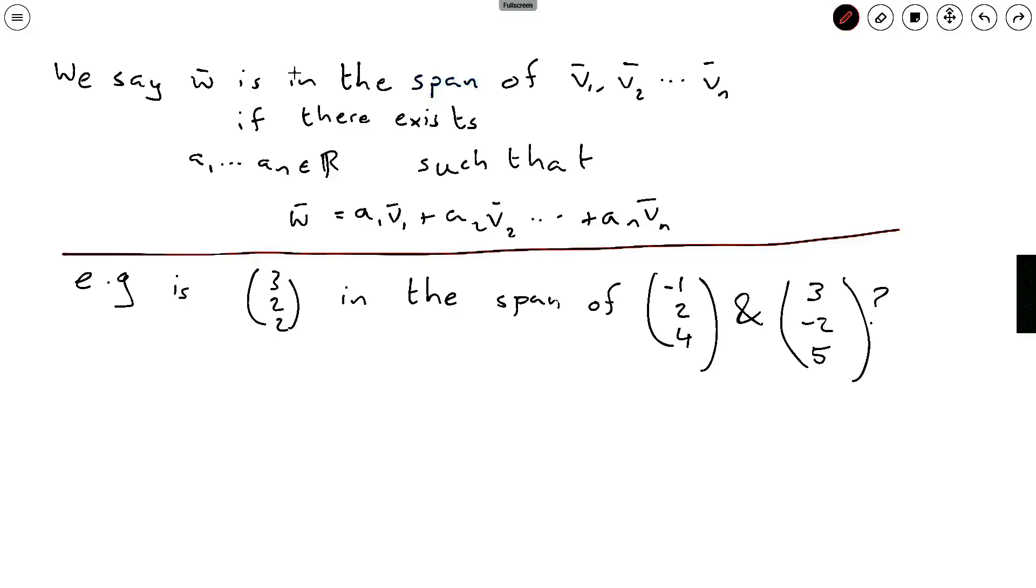Now you might know in your course that this thing on the right hand side is called a linear combination. So the question is to say is there a linear combination of v1 to vn such that that linear combination is w.